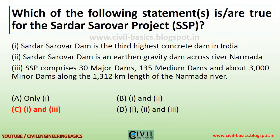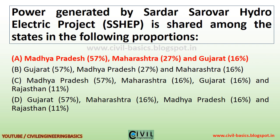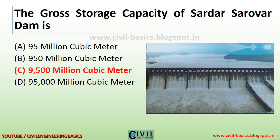Which of the following statements are true for the Sardar Sarovar Project (SSP)? Sardar Sarovar Dam is the third highest concrete dam in India, and SSP comprises 30 major dams, 135 medium dams, and about 3,000 minor dams along the 1,312 km length of the Narmada River. Power generated by the Sardar Sarovar hydroelectric project is shared among Madhya Pradesh, Maharashtra, and Gujarat. The gross storage capacity of Sardar Sarovar Dam is 9,500 million cubic meters.